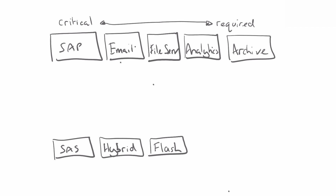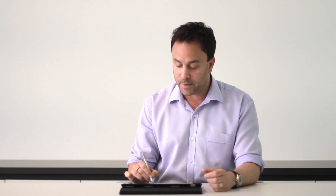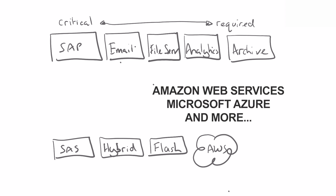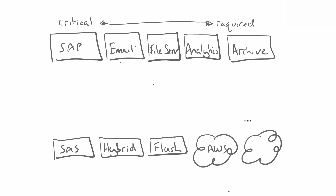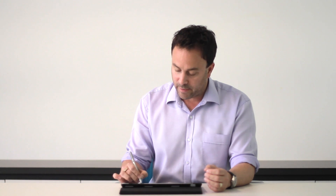Importantly, NetApp can also provide data services from the cloud. We can include the Hyperscaler environments such as AWS or Azure, or we can provide data services from one of the niche cloud players. We have over 25 service providers in the ANZ market alone providing their data management services on NetApp, and these include organisations such as DD or Interactive.